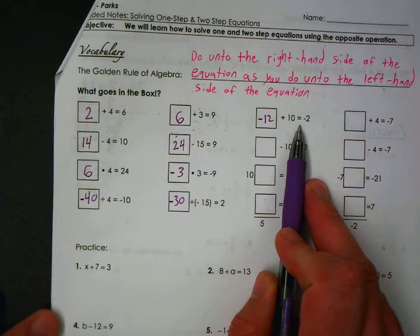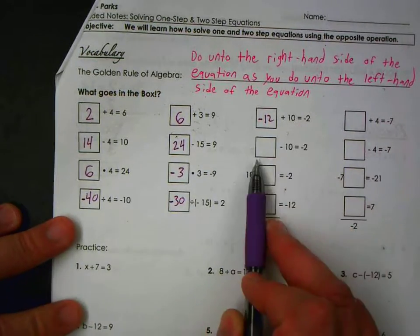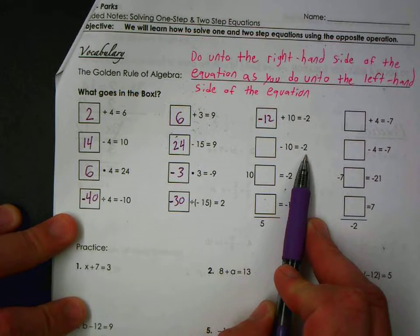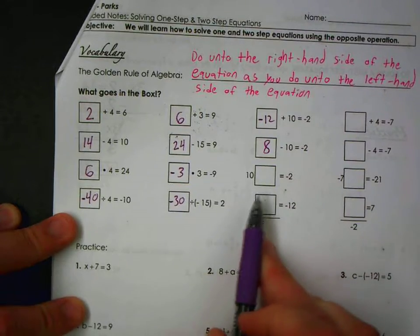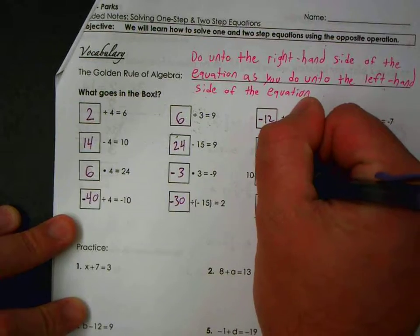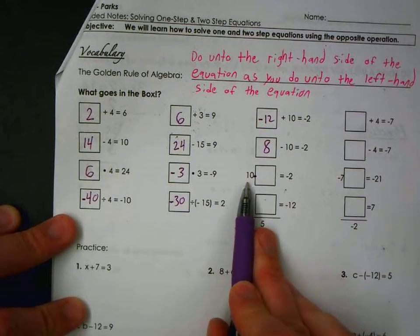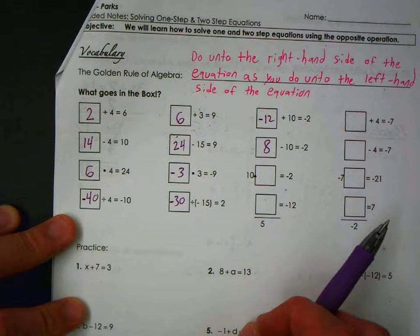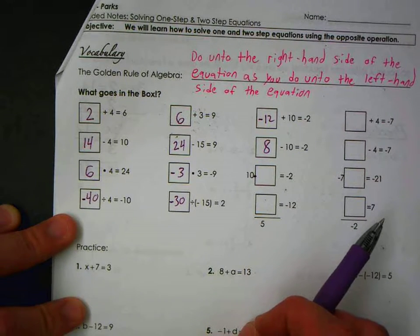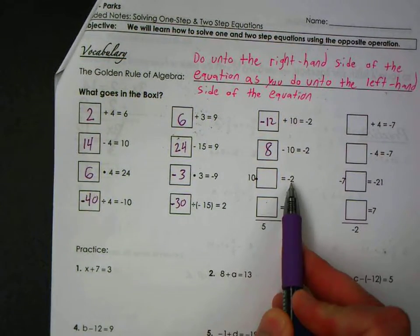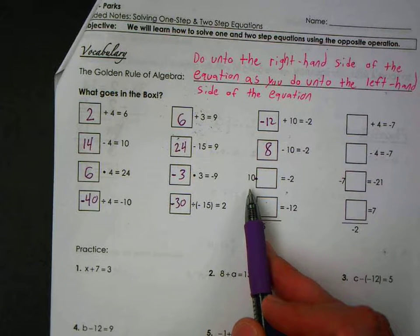And the word 'is' in math makes an equal sign. What number minus ten is negative two? Eight. Ten times what is negative two? The answer is going to be negative two divided by ten, which reduces to negative one-fifth.